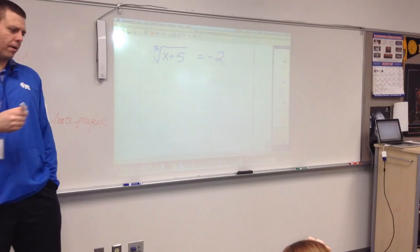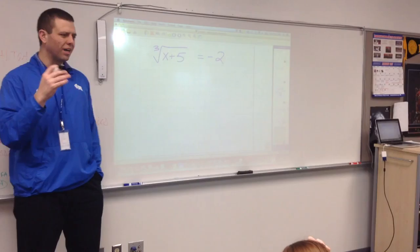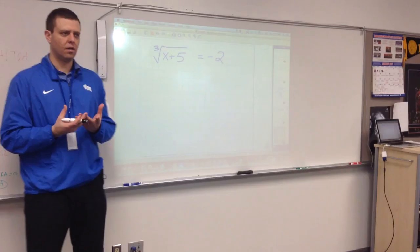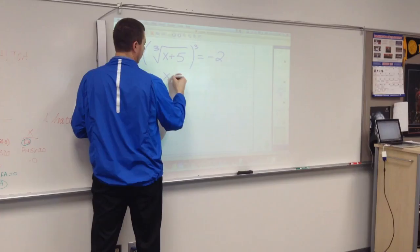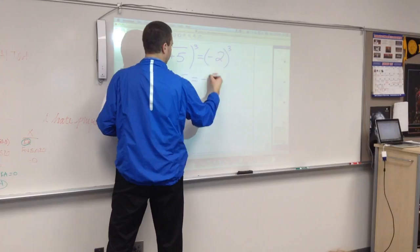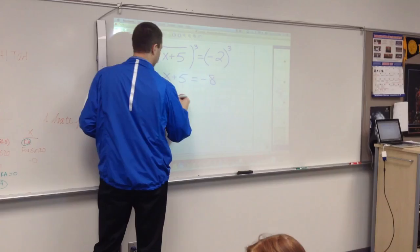When you want to cube something, you have to cube the entire side. When you raise that to the third power, all that does is get rid of the cube root, you're left with x plus five. Make sure you do it to the other side. And you get negative eight. Subtract five from both sides and you get x equals negative 13.